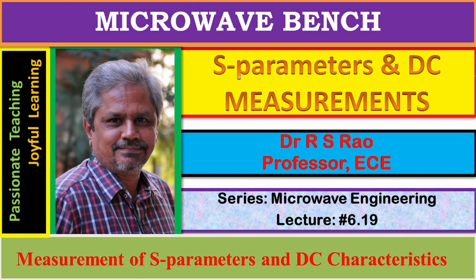Several parameters can be measured using the bench, including SWR, frequency, and impedance. It is also useful in finding the S-parameters or S-matrix of a junction device, provided the device is an ideal reciprocal one. It can also be used to measure the performance indices of a directional coupler. The focus of this session is on measurement of S-parameters and measurement of performance indices of a directional coupler using the Microwave Bench.